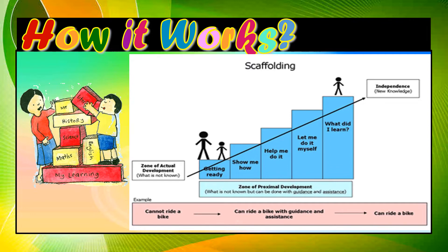For example: a student cannot ride a bike, then can ride a bike with guidance and assistance, and finally can ride a bike independently. It follows a sequence: first, getting ready; then showing me how; then help me do it; then let me do it myself; and finally, what did I learn. From the zone of actual development, we advance to the level of independence — the knowledge and skills gained. That is how scaffolding works.